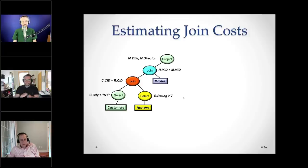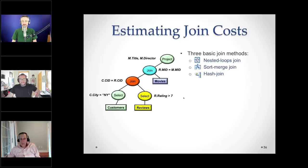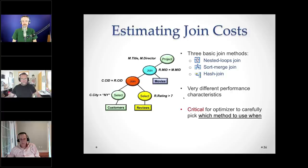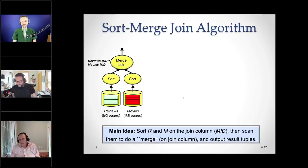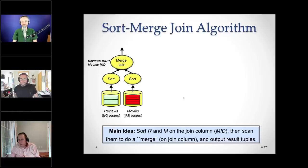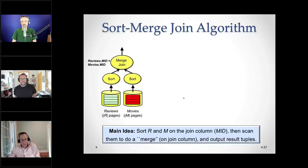Here's the slightly more complicated query finding movie titles and directors for customers in New York with ratings greater than 7. There are three basic join methods: nested loops, sort merge, and hash join — with very different performance characteristics critical for the optimizer to get right. Sort merge is a very classic algorithm: you sort one table on the join attribute, sort the other table on the join attribute, and then concurrently scan the two tables gluing matching rows back together. This is for equi-joins, and almost all joins are equi-joins. It gives very stable performance over a large range of table sizes.